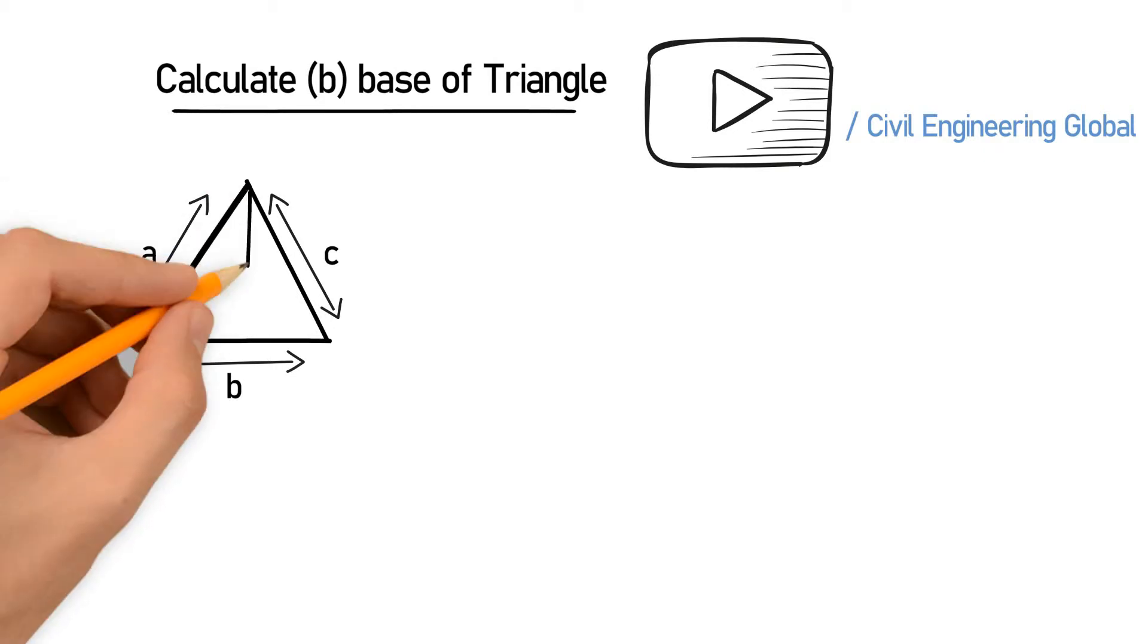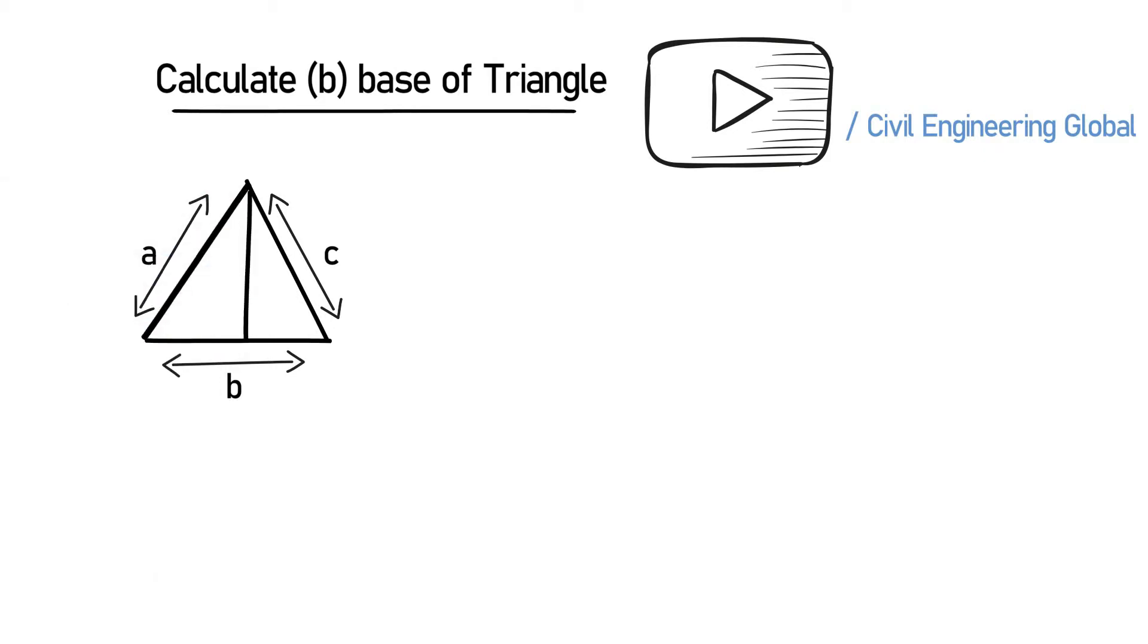So this line will be the HB. Suppose an example we have the following data.